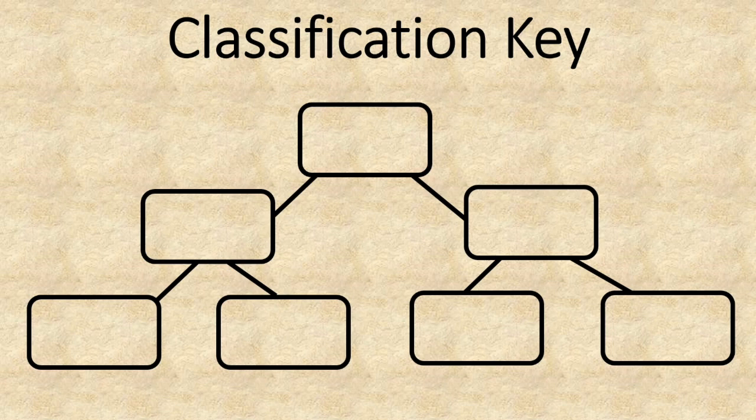A classification key is a diagram that organises the groups you're categorising. It's a visual way of seeing what falls into each group, helping us see the commonalities between them. The key helps us see the criteria and the things that have them. There is a title and a series of subgroups — in our case the title would be dinosaurs, and we'll discuss the subgroups and criteria as we move on.